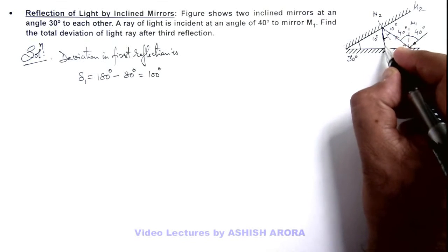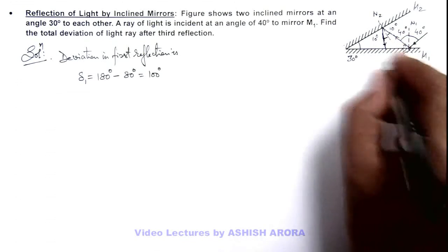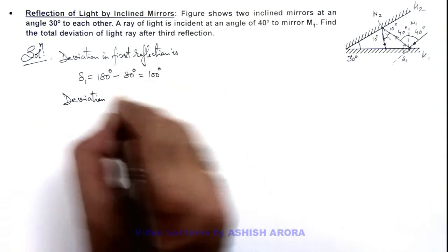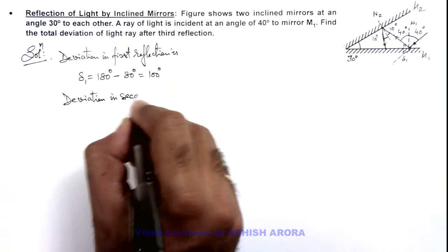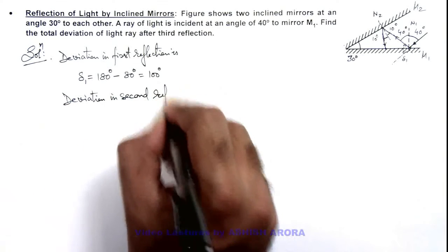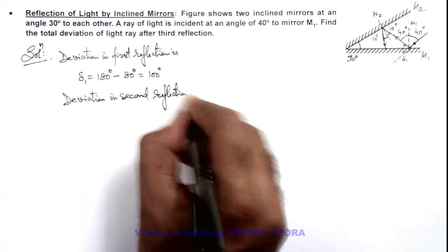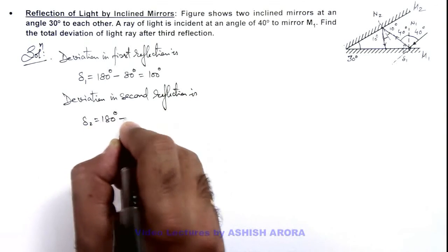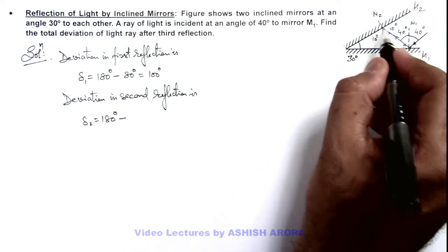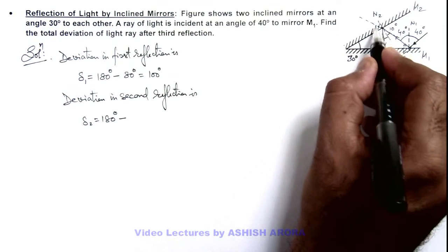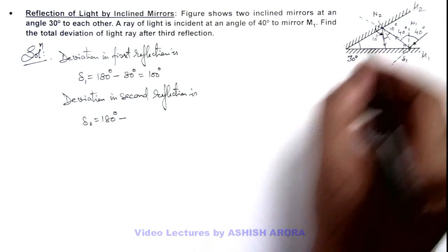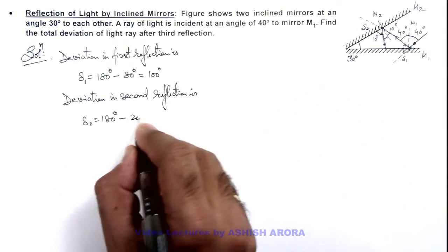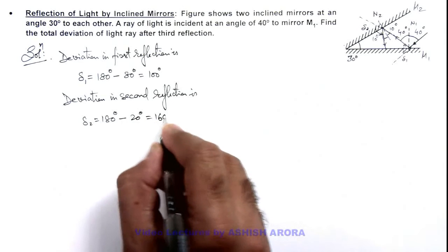The ray is finally incident over here again on mirror M1. So if we calculate the deviation in the second reflection, delta 2 can be written as 180 degrees minus — this is 10 plus 10 because the original direction gives 10 degrees and it is reflected here. So the deviation angle delta 2 is 180 minus 20 degrees, that is 160 degrees.